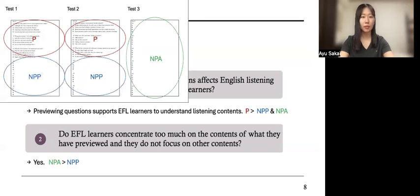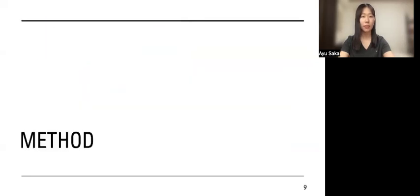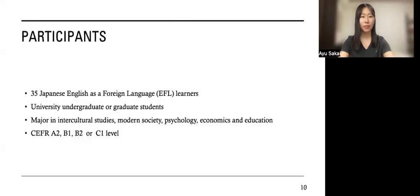Next, moving on to the method. The participants were 35 Japanese university undergraduate or graduate students, majoring in various fields, such as intercultural studies, modern society, psychology, economics, and education. Their proficiency levels were A2, B1, B2, or C1.